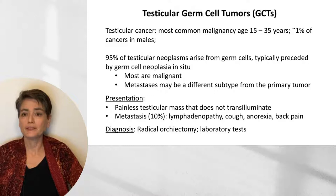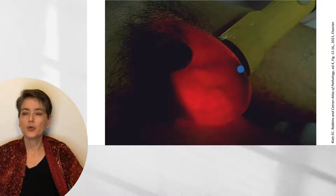We can also use laboratory tests in order to subtype the tumor. Here's an example of transillumination of a hydrocele. You can see that light shines through this fluid, whereas if this were a neoplasm, there would be no transillumination.